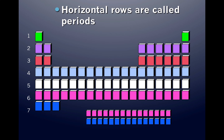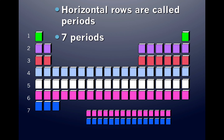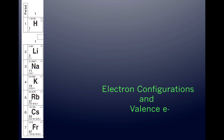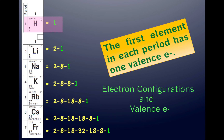The periodic table is made up of horizontal rows called periods. There are currently seven periods on the periodic table, which represent the seven energy levels in which electrons move. The first element in each period has one valence electron. Hydrogen has one valence electron in the first energy level, lithium has one valence electron in the second energy level, sodium has one valence electron in the third energy level, and so on.